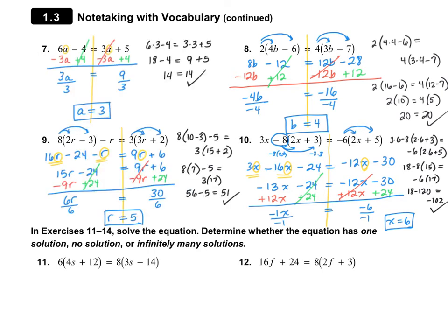Here's what I got: number 7, A equals 3; number 9, R equals 5. If you got them wrong, please see if you can find your mistakes.